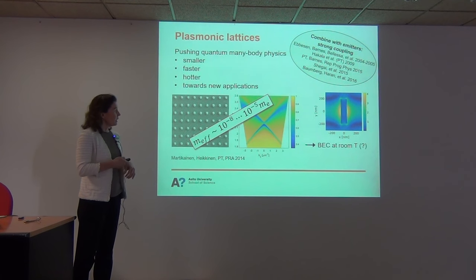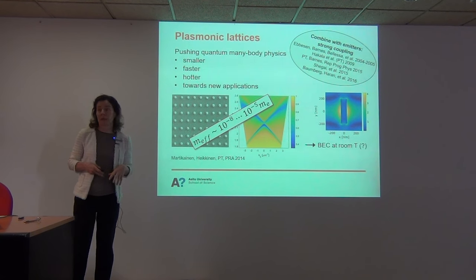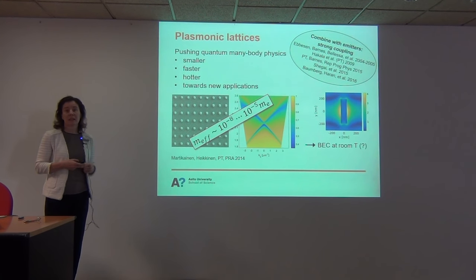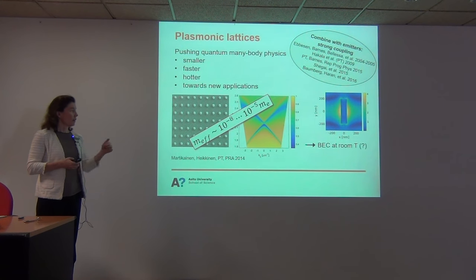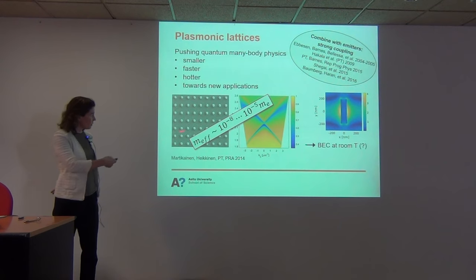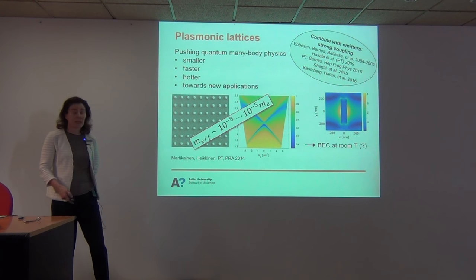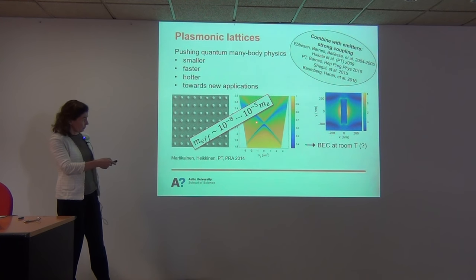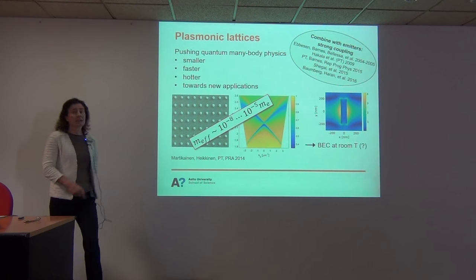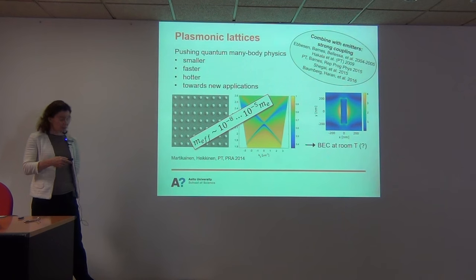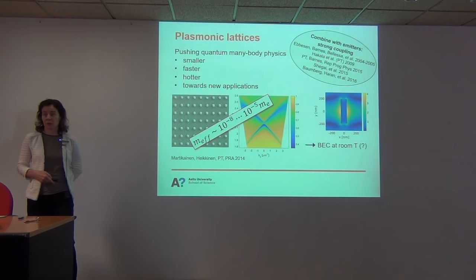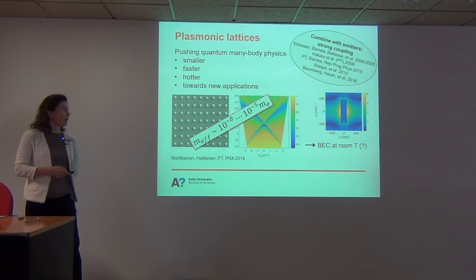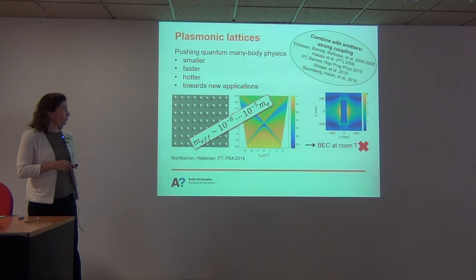One more interesting thing about this system is that strong coupling can be reached quite easily in plasmonic systems in general, and also in these systems as has been shown by many works. Our system is periodic, so it actually does have something like a band structure — this is an experiment showing it. You can calculate the effective mass in this band structure and it's very very small. From there you can make an estimate of when it could condense, and the estimate was that it could condense at room temperature. This has been my goal for many years, and now we have seen it.